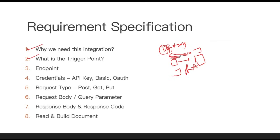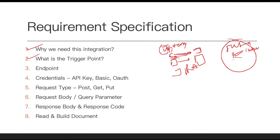Next, you should know the type of integration — inbound or outbound. If you are sending data from ServiceNow to Jira or any third party, that is called outbound. If you are receiving data, for example Jira sending data and you are creating a story or incident in ServiceNow, that is called inbound. When both directions are used, we call that bi-directional.